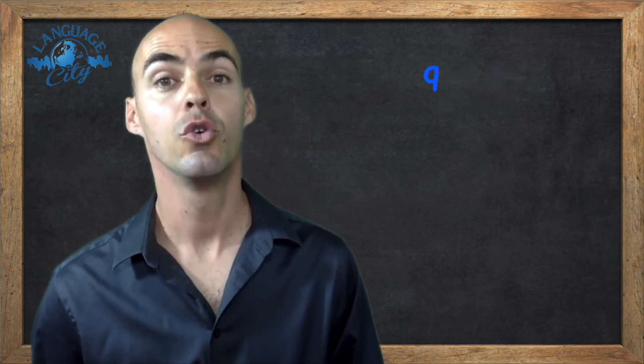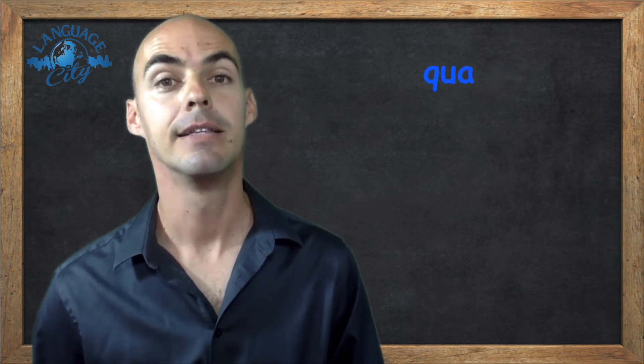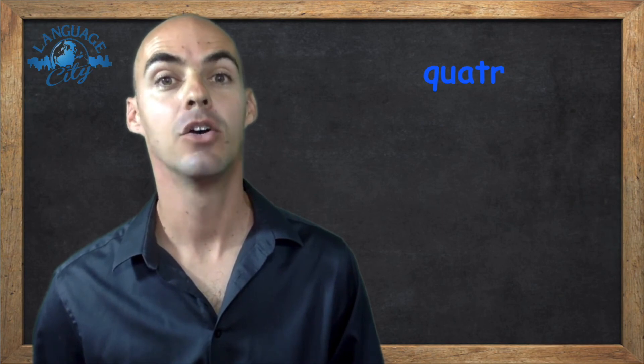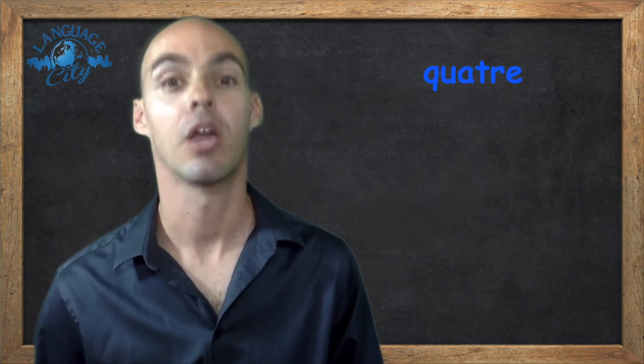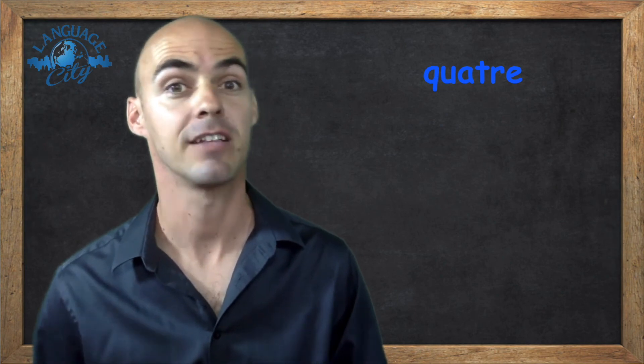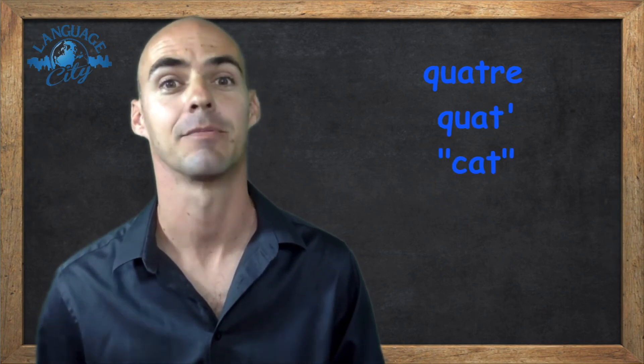Number nine was Q, U, A, T, R, E. Quatre, number four. Remember that when the French speak fast, they'll tend to say cat, almost like a cat.